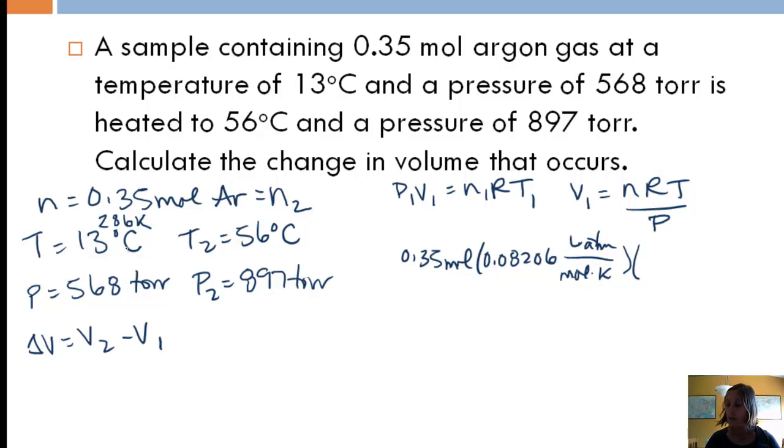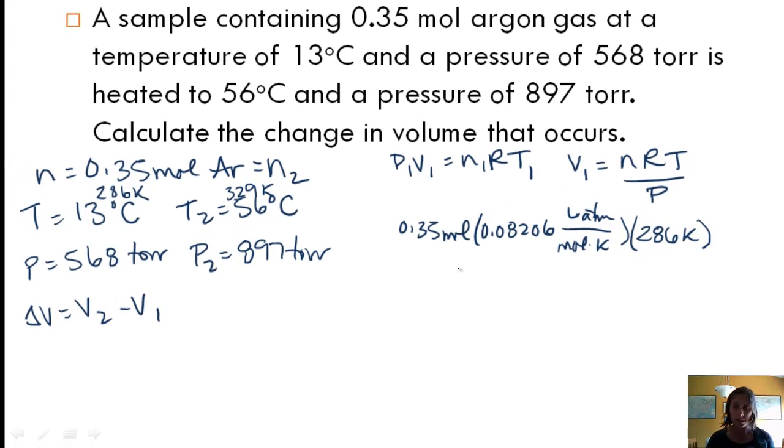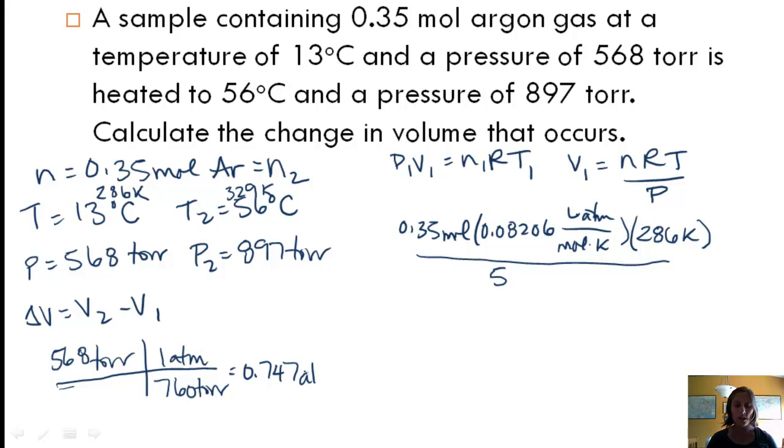So this is T1 which is 286 Kelvin, and then divide by my pressure. My P1 is 568 torr. Now that's not going to work either because I am in atmospheres. So in order to convert torr, 568 torr, if you remember there is 760 torr per atmosphere. And I've already done this one and it's 0.747 atmospheres. While we're here we might as well do P2 so we don't forget. And if we do the same conversion we get 1.18 atmospheres.